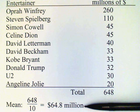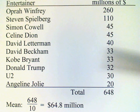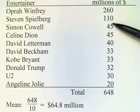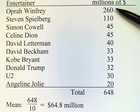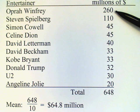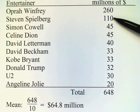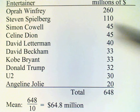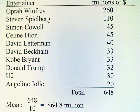But if we look back at the data set, we notice that the mean value of 64.8 is actually greater than all but two of the data values. That is because the entertainers at the top — Oprah Winfrey and Steven Spielberg — earned so much more than all of the others. When this happens, we refer to the mean as skewed by those values.